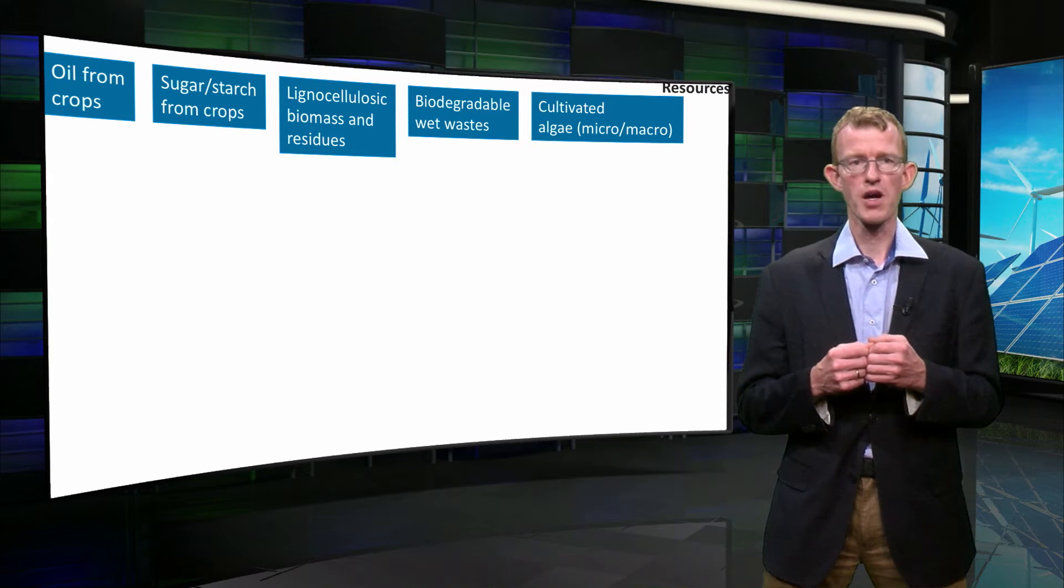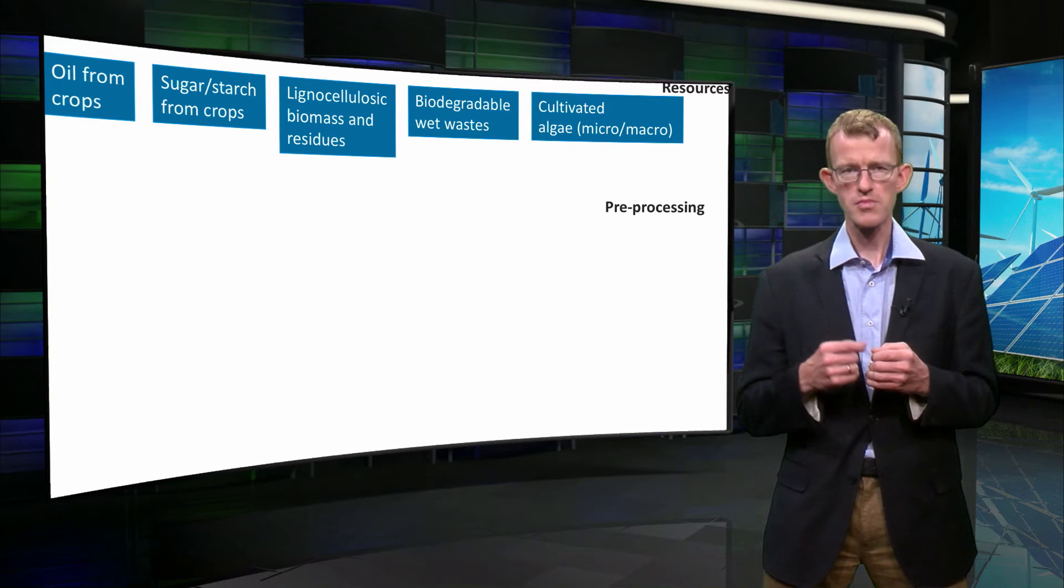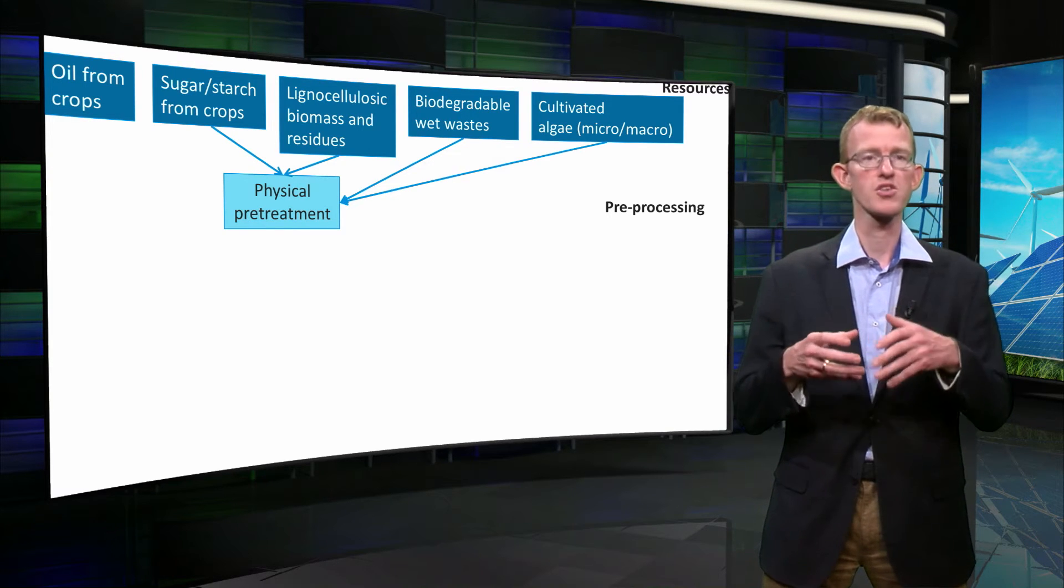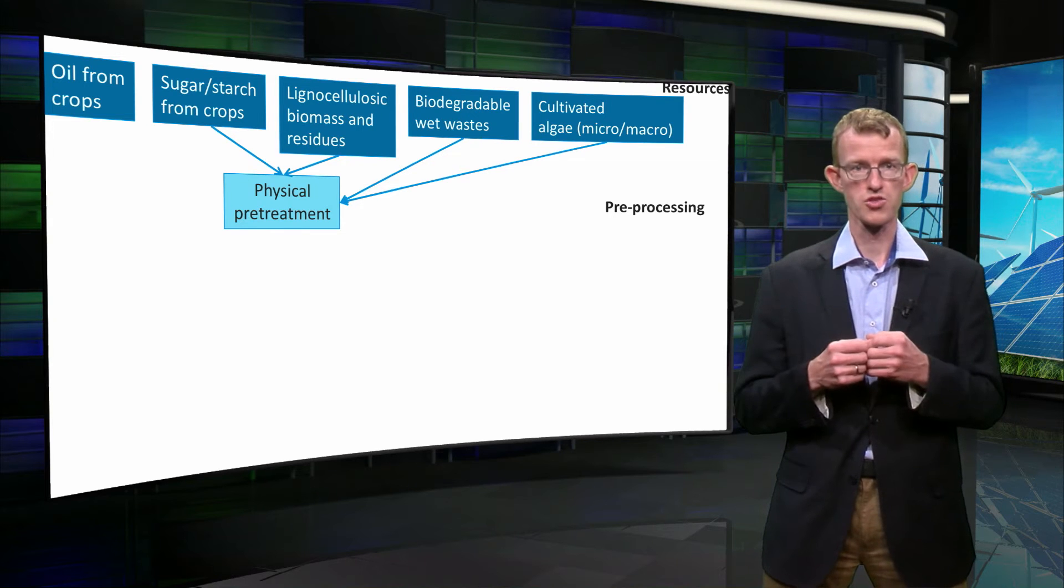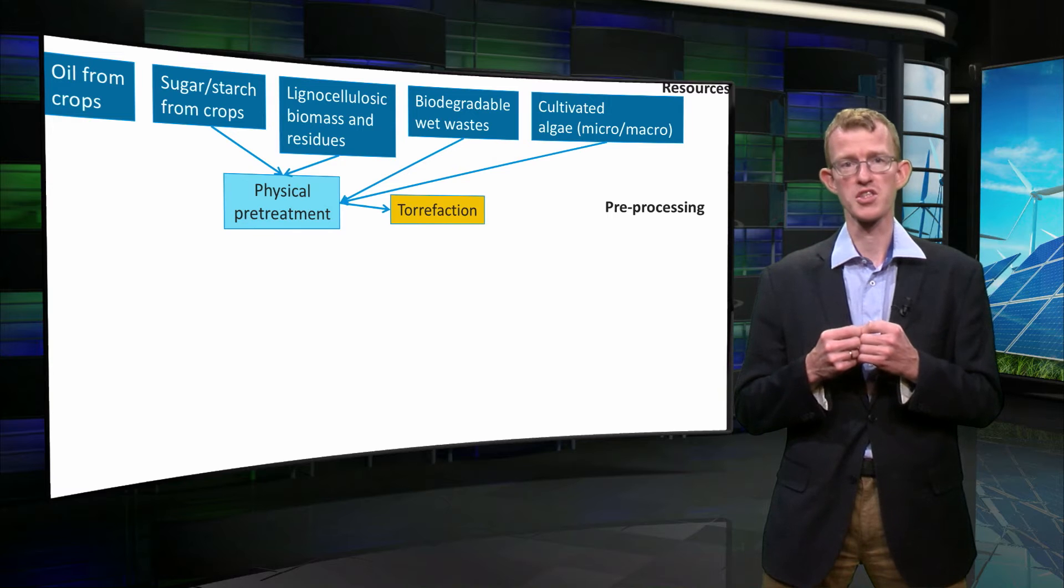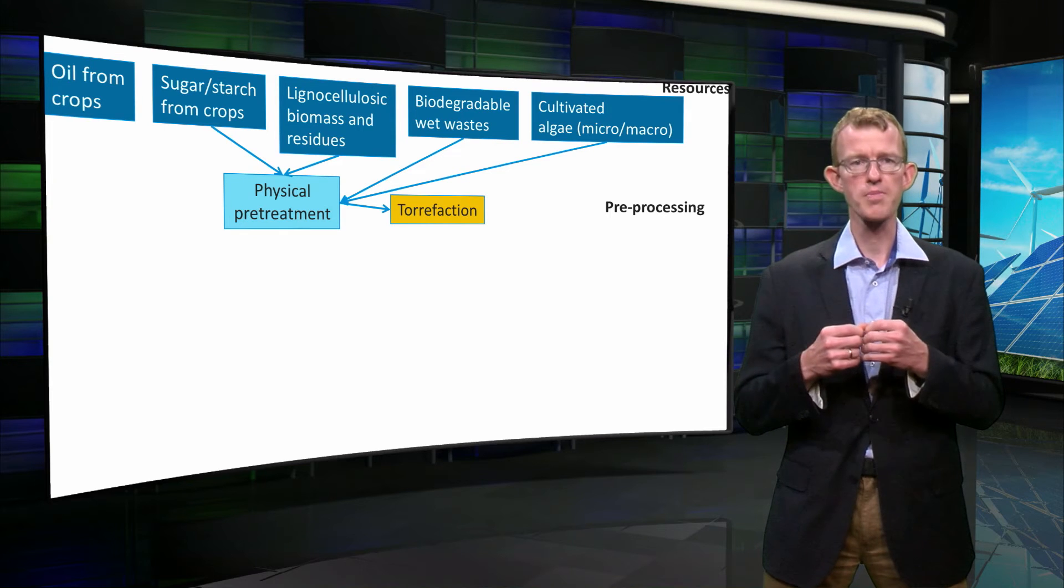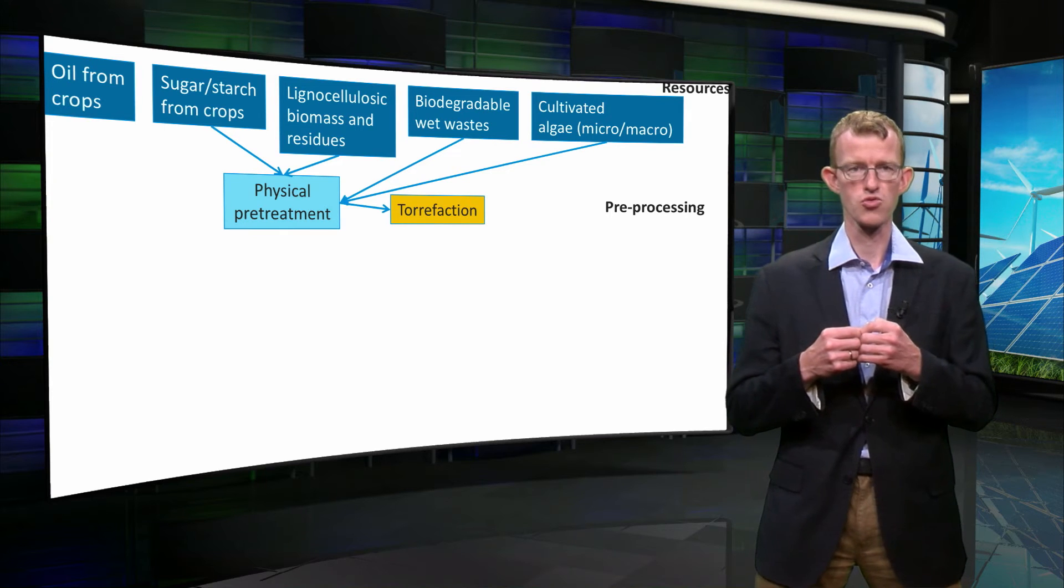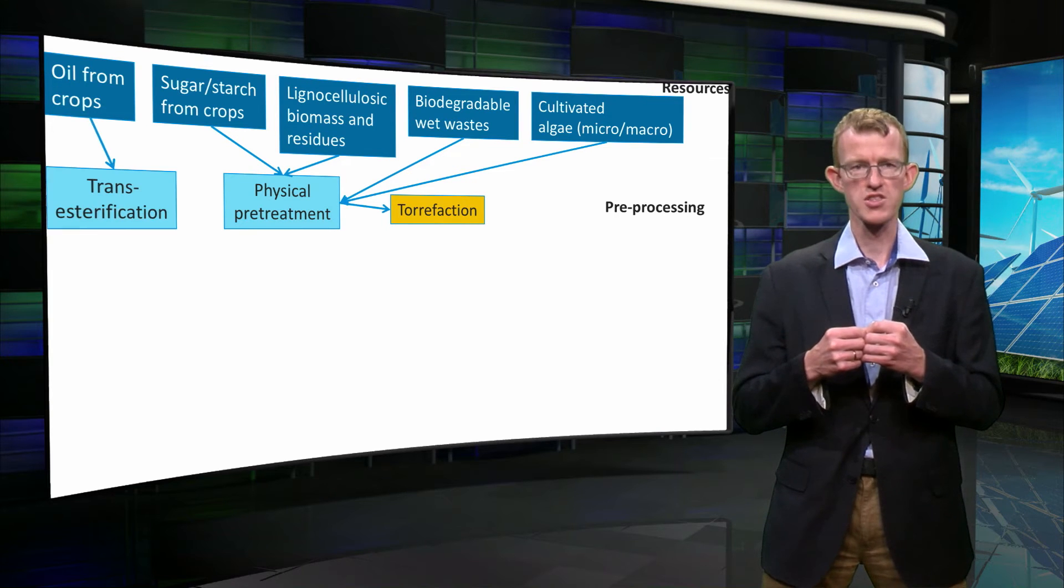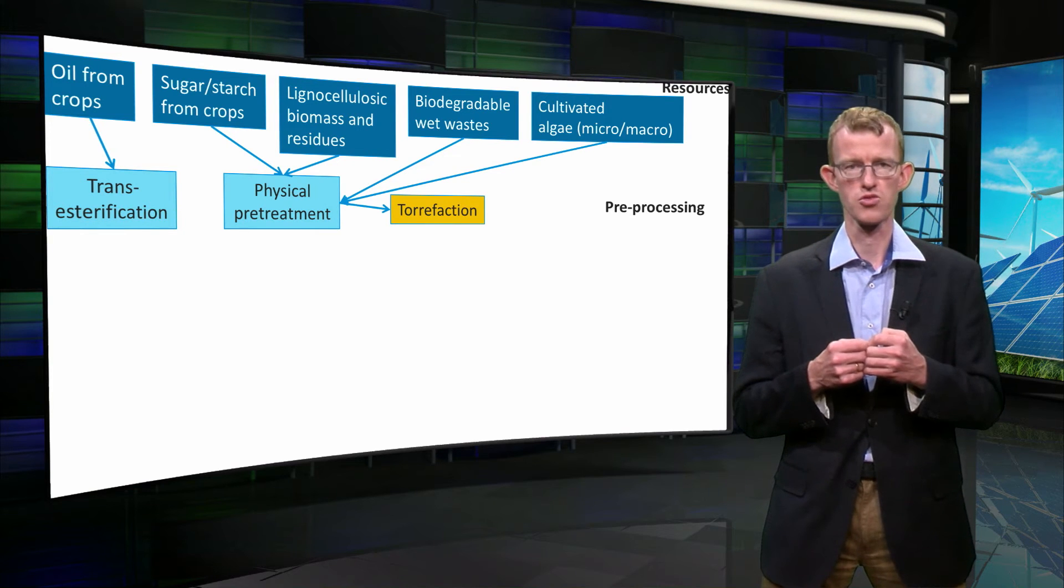In many cases the biomass needs some pre-processing before the actual processing can take place. This often concerns physical pre-treatment. Think for example of drying to get rid of water from the biomass, or grinding to get manageable pieces. Sometimes torrefaction is applied, and this is a mild type of heating at about 250 degrees Celsius to make biomass more brittle and easier to grind. In the specific case of oil from crops, we often need transesterification, a chemical reaction to get molecules that can be used as biodiesel.